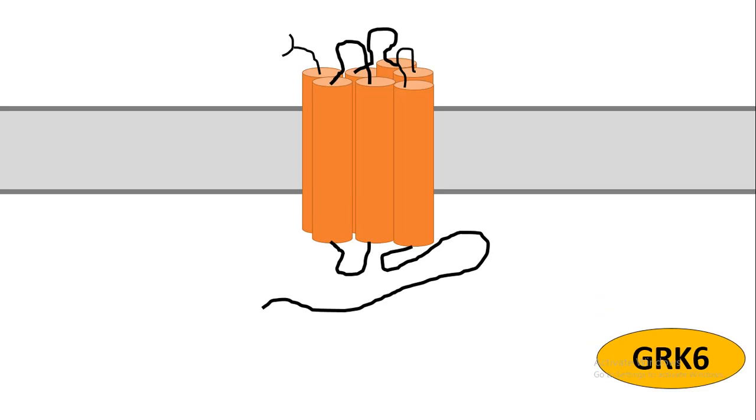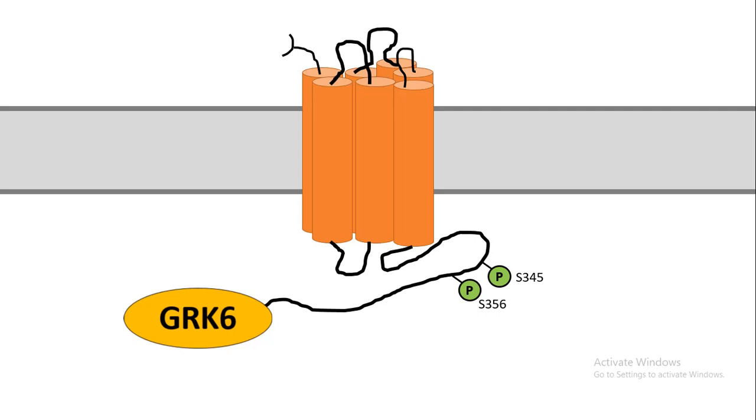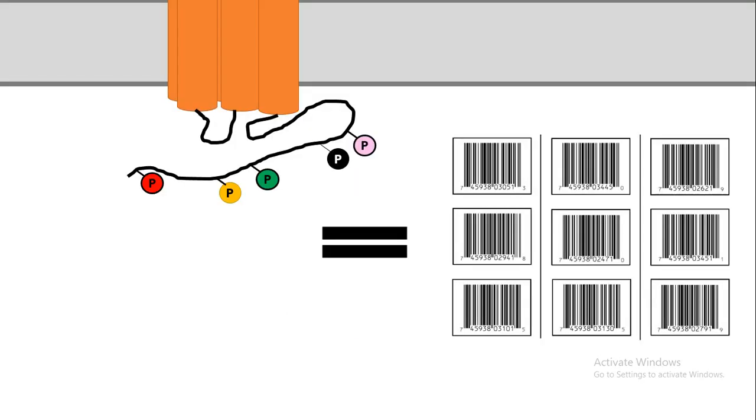Whereas GRK6 phosphorylates a different set of residues on the C-terminal domain of the GPCR. This different pattern of phosphorylation works like a barcode. Each particular pattern of phosphorylation has a specific meaning to it that could be read by specific barcode readers in the cell. For example, beta-arrestin can read this kind of differential phosphorylation.